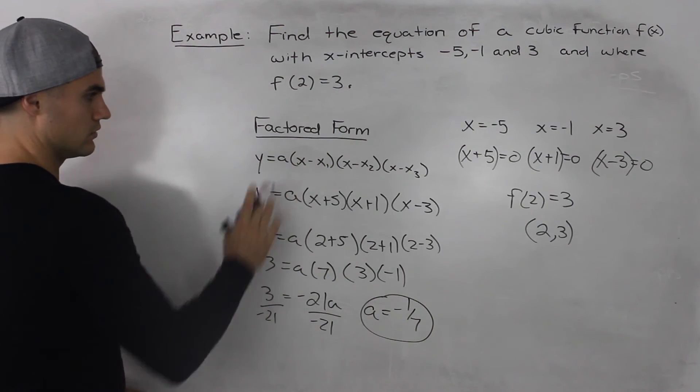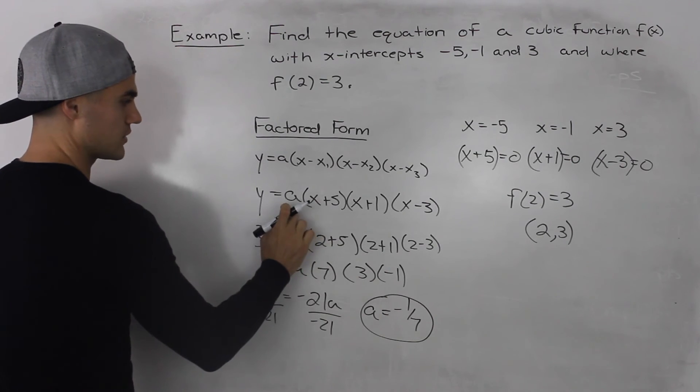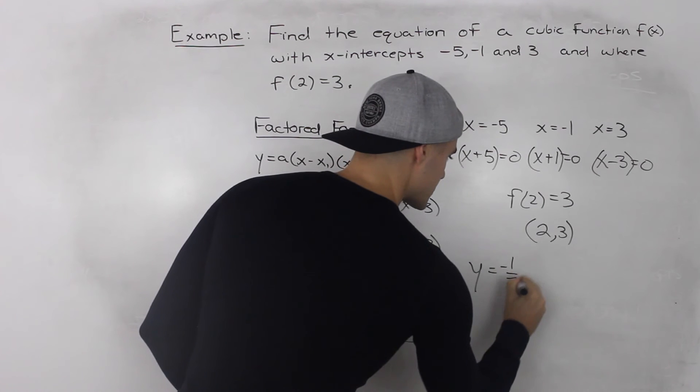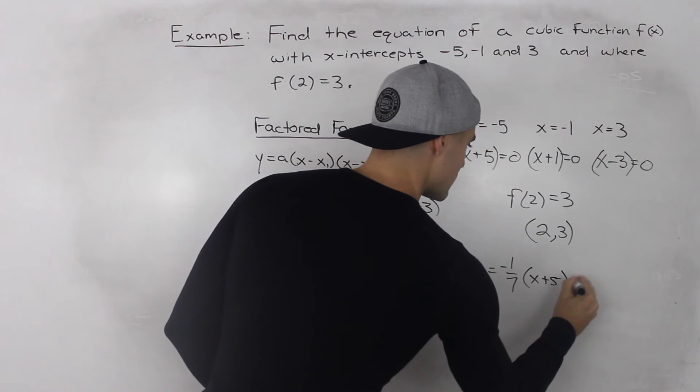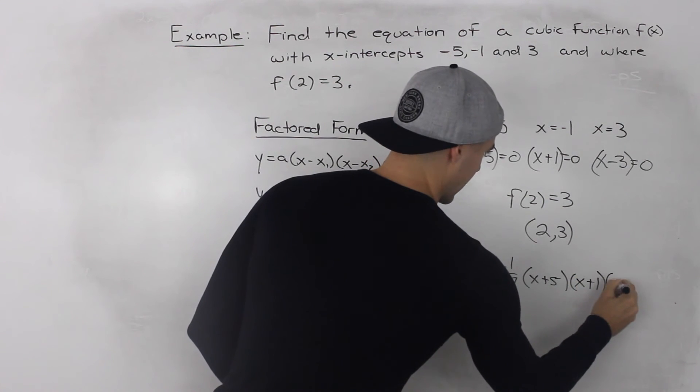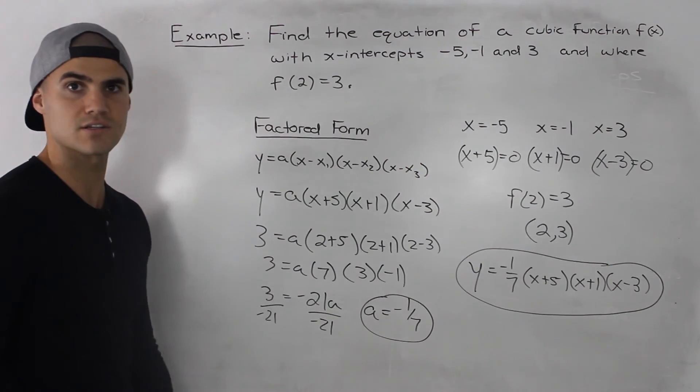So our final equation of the cubic function, we would just plug in this a value here. So y = -1/7(x + 5)(x + 1)(x - 3). So that there is our final answer.